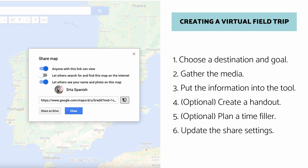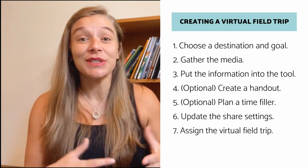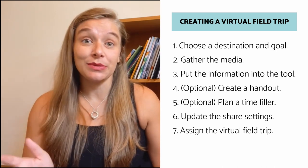The next step is to update your share settings. Whatever tool you used to create the virtual field trip, go make sure students have access to it — click share, set it to 'anyone with a link can view,' and make sure that's good to go. Do the same for any digital handouts, or print and make copies. The very last step is to assign it to students. If you use Google Classroom, make an assignment. If you use Schoology, Canvas, or whatever your LMS is, post that link where students can see it. If your school doesn't use an LMS, create a bit.ly link and put the shortened URL on your whiteboard for students to enter into their devices.